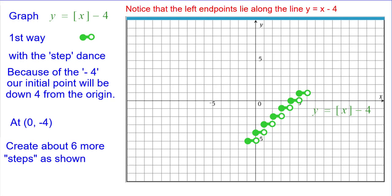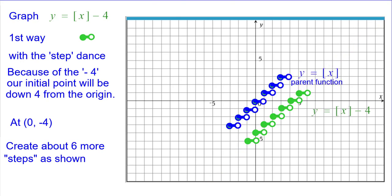Please notice that the left endpoints, the colored endpoints, lie along the line y equals x minus 4. Also notice that the graph is 4 below the parent function. Every single point is down 4.